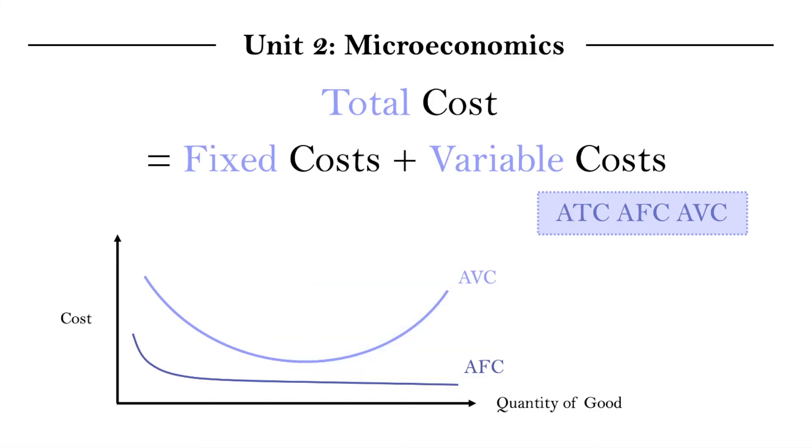So, now we understand the shapes of our average fixed cost and average variable cost curves, which only leaves our average total cost left. And the awesome part is that total cost was simply a sum of our fixed costs and variable costs, right? So, actually pause the video and try to guess what our average total cost curve would look like.